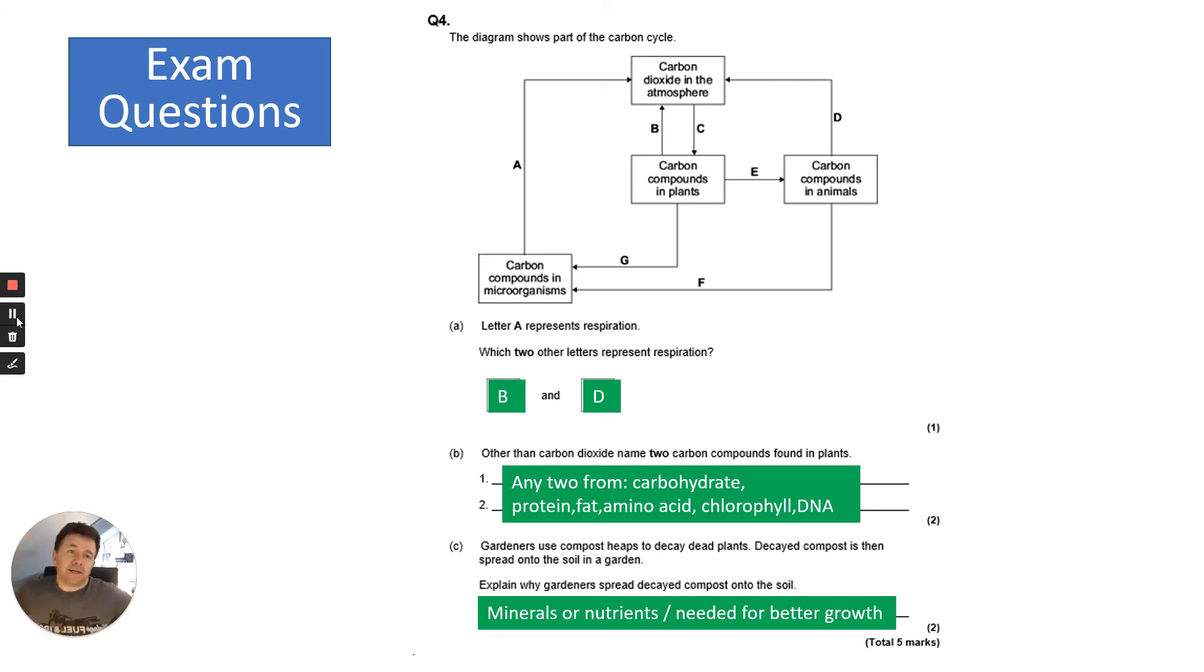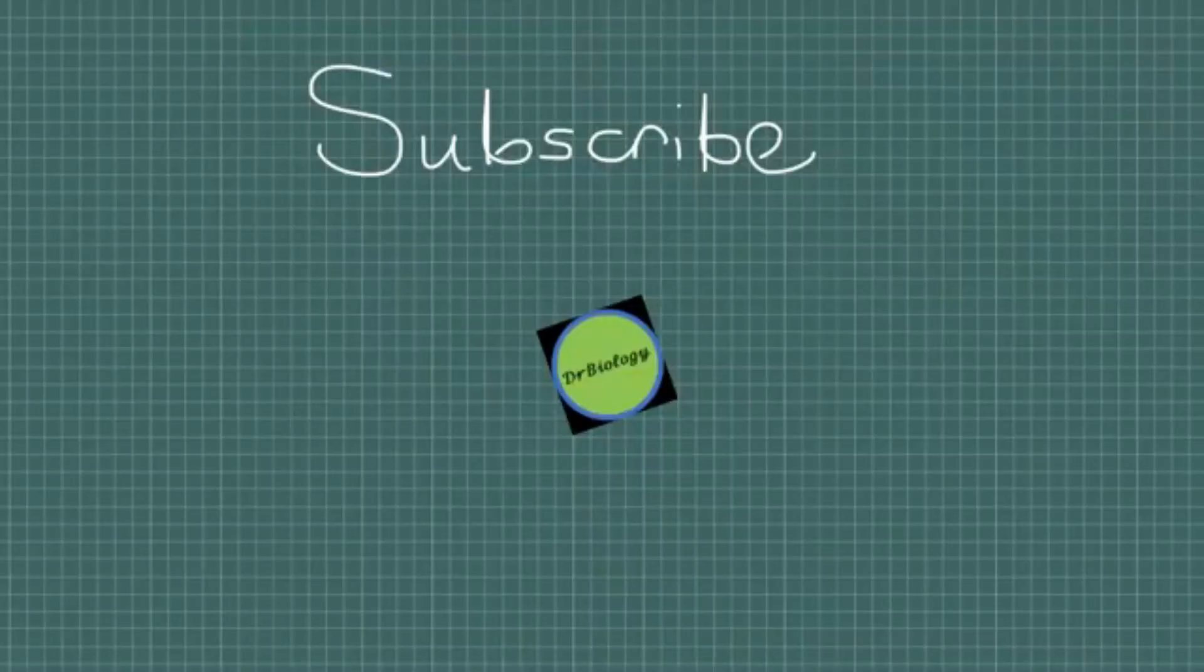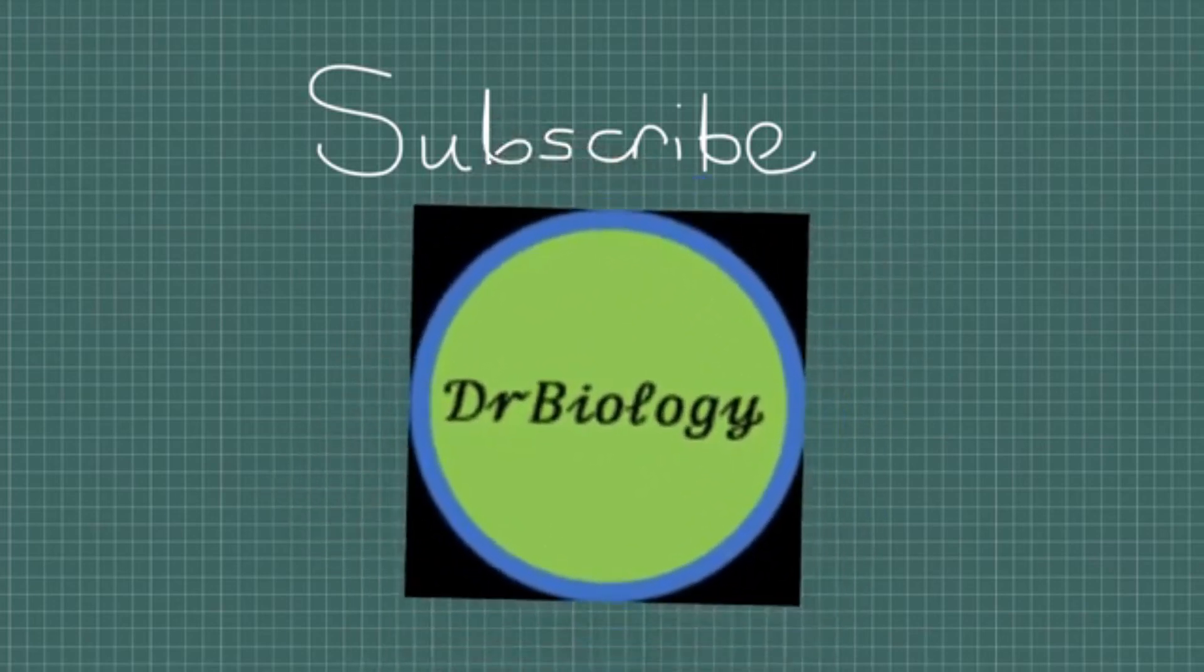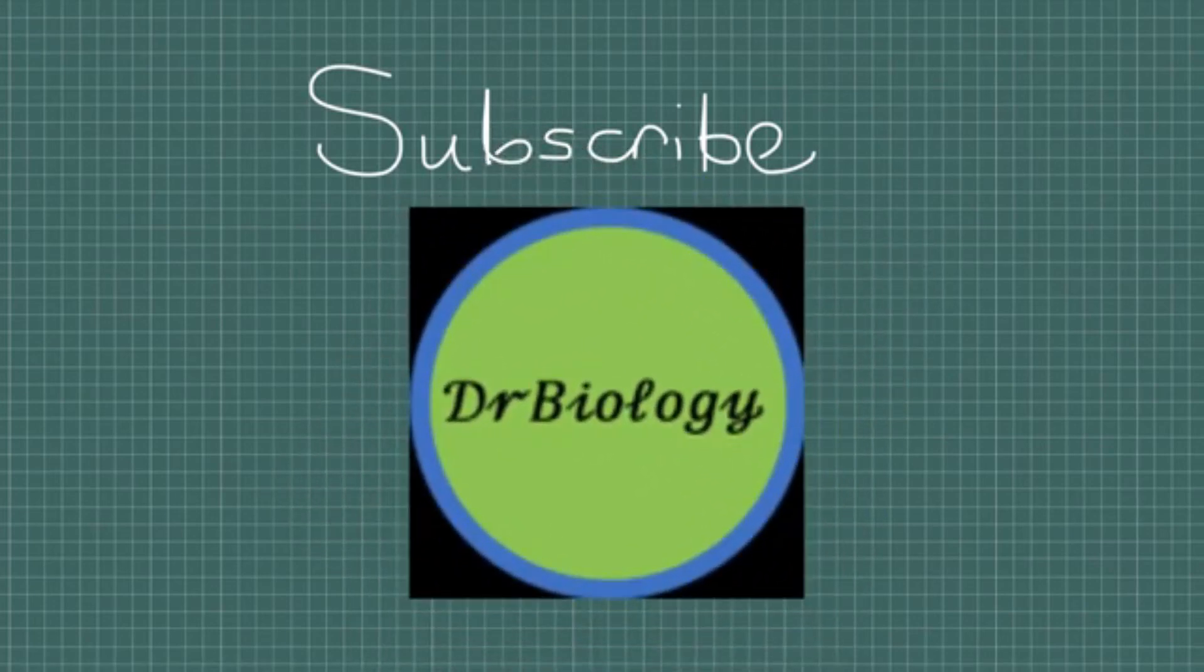With all of these questions, just remember they give you lots of information. In terms of the carbon cycle, it's always about the three processes: photosynthesis, respiration, and combustion. If you remember that, then you should be okay when you answer these style of questions. I hope you found that video useful. Please do subscribe if you haven't already to Dr. Biology, and there'll be more videos coming soon.